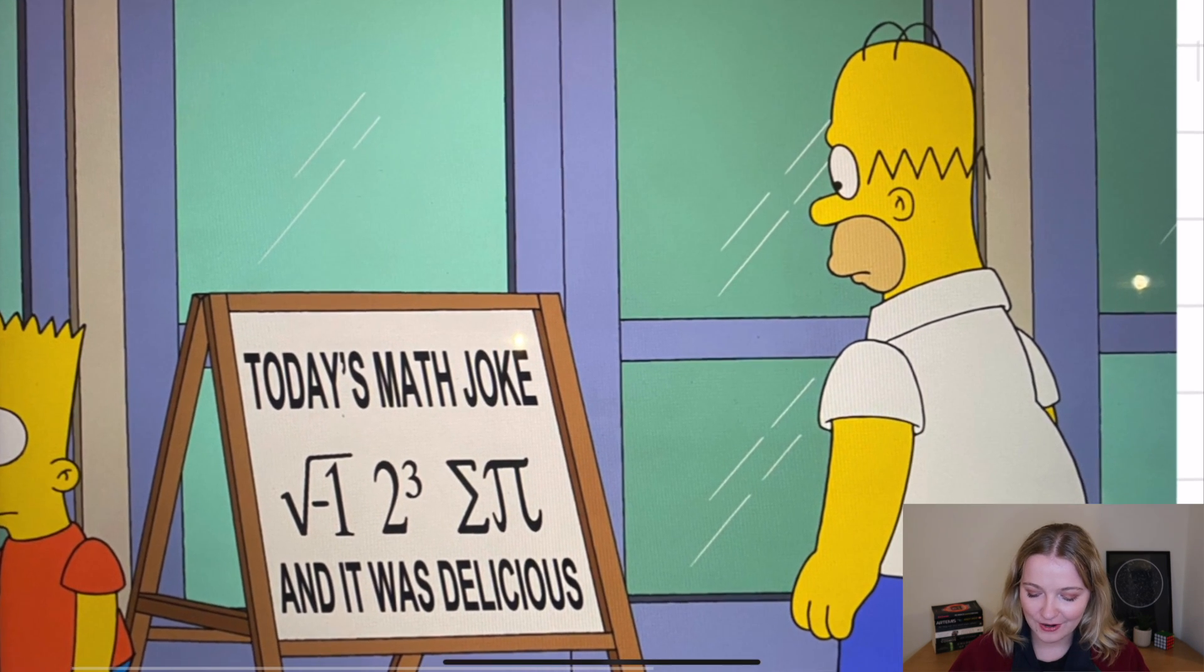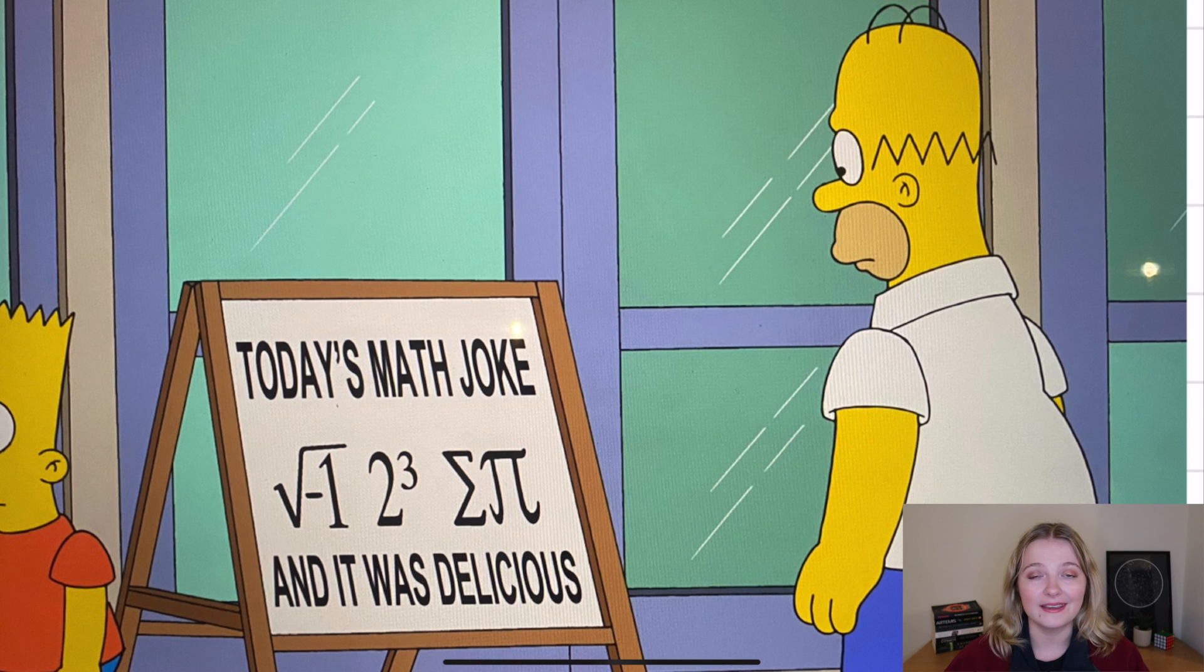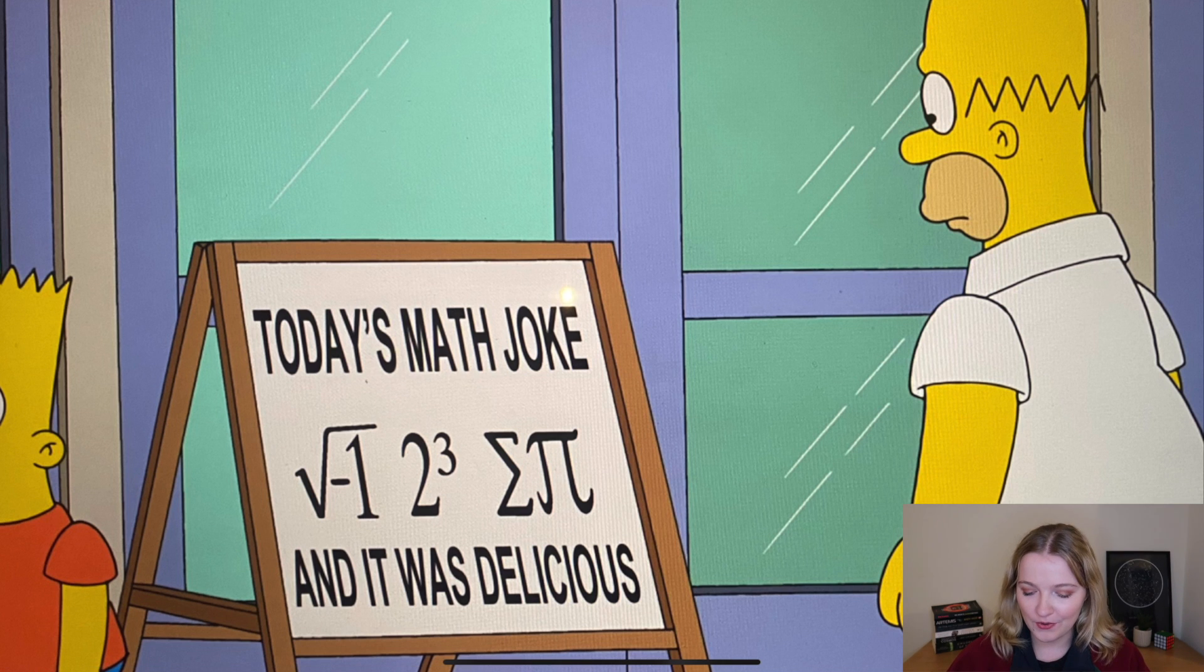The next maths that we see is when Homer starts reading today's maths joke, although in the actual episode he's not laughing at the maths joke, he's laughing at a dog with some box on his head. But anyway, this maths joke, hopefully mathematicians, you'll have seen this one before, it's quite a common one.